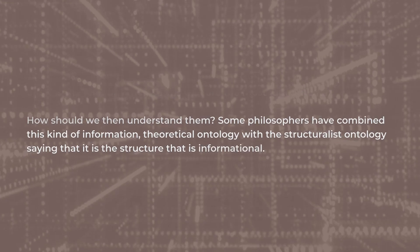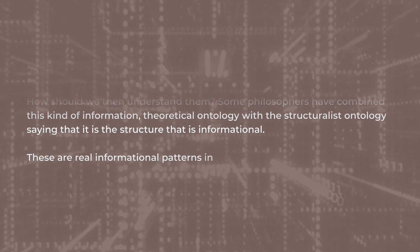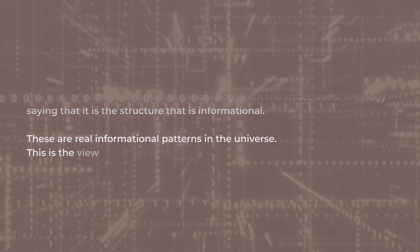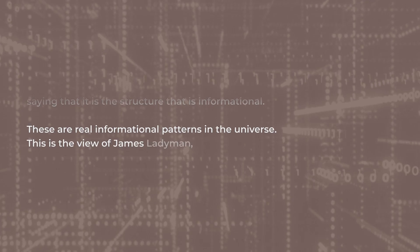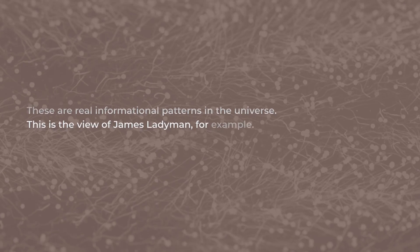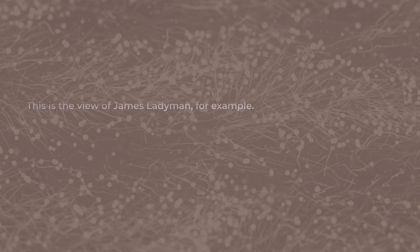Some philosophers have combined this kind of information theoretic ontology with the structuralist ontology, saying that it is the structure that is informational, there is a real informational pattern in the universe. This is the view, for example, of James Ladyman.